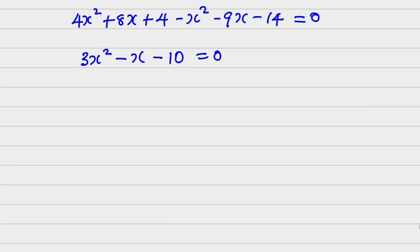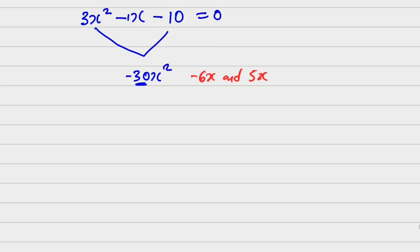This is now something I can factorize. Multiplying 3 by negative 10 gives minus 30x squared. I need factors of minus 30 that add up to minus 1 — those are minus 6 and plus 5. So I rewrite as: 3x squared minus 6x plus 5x minus 10 equals zero.